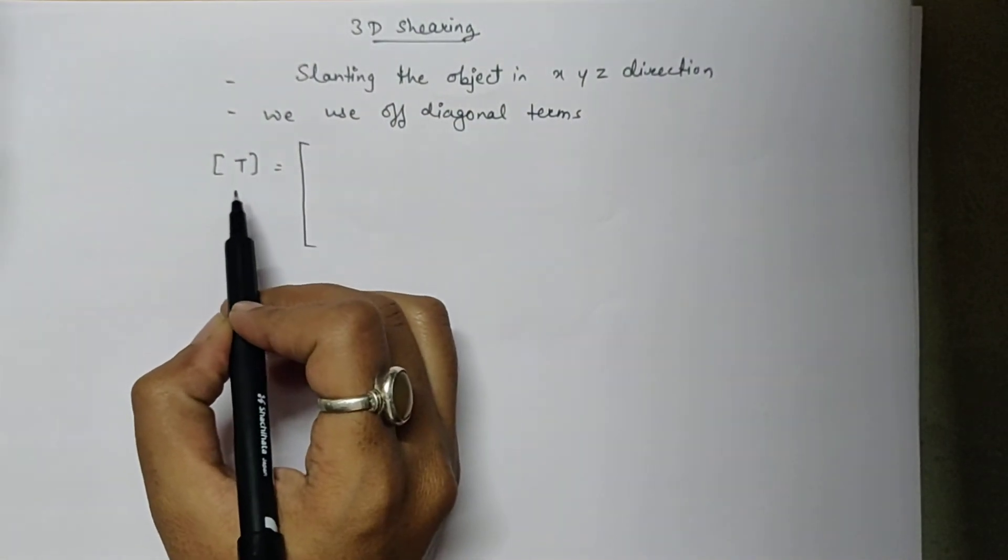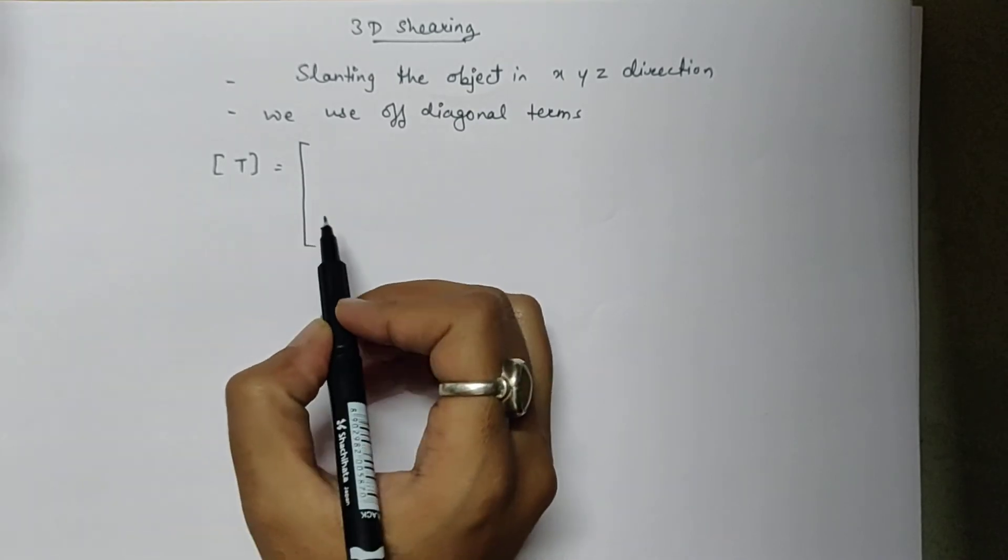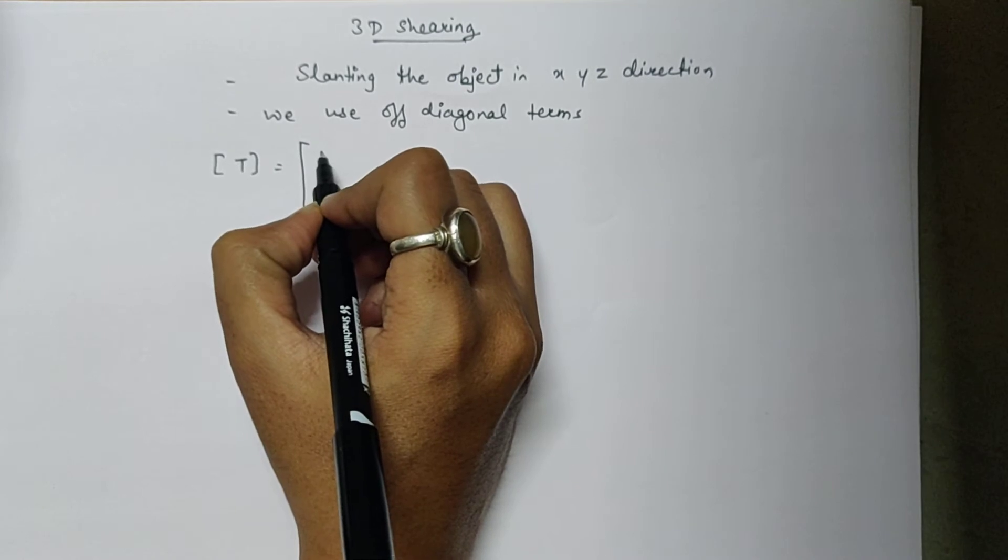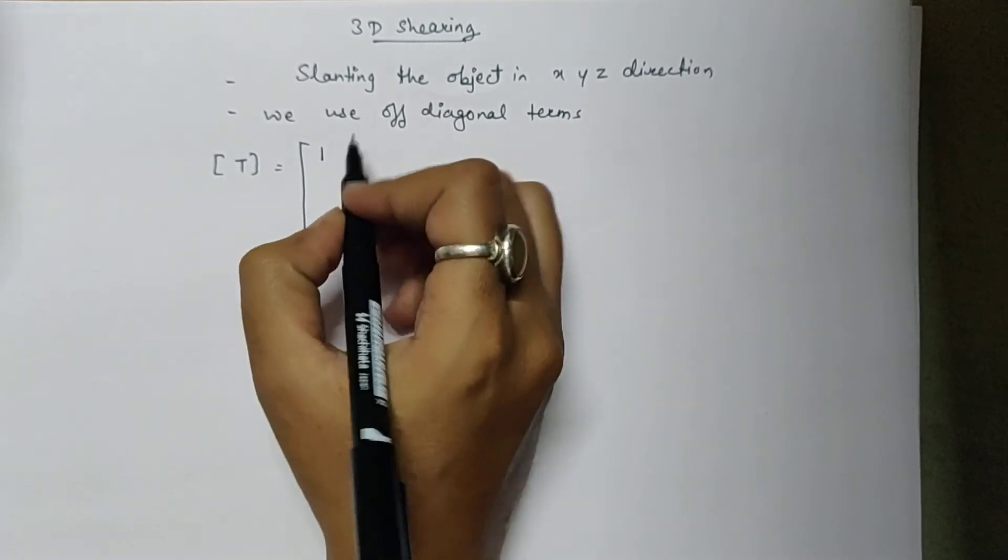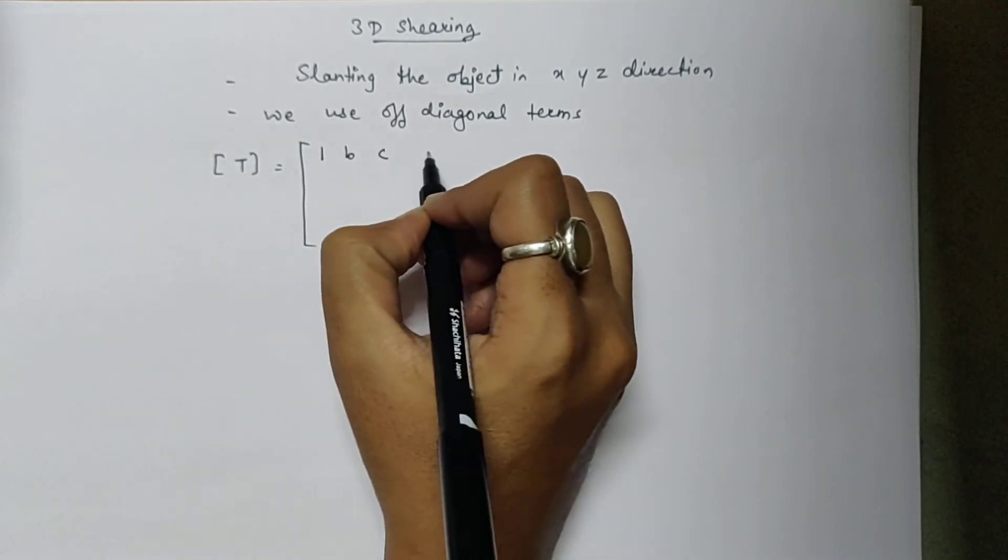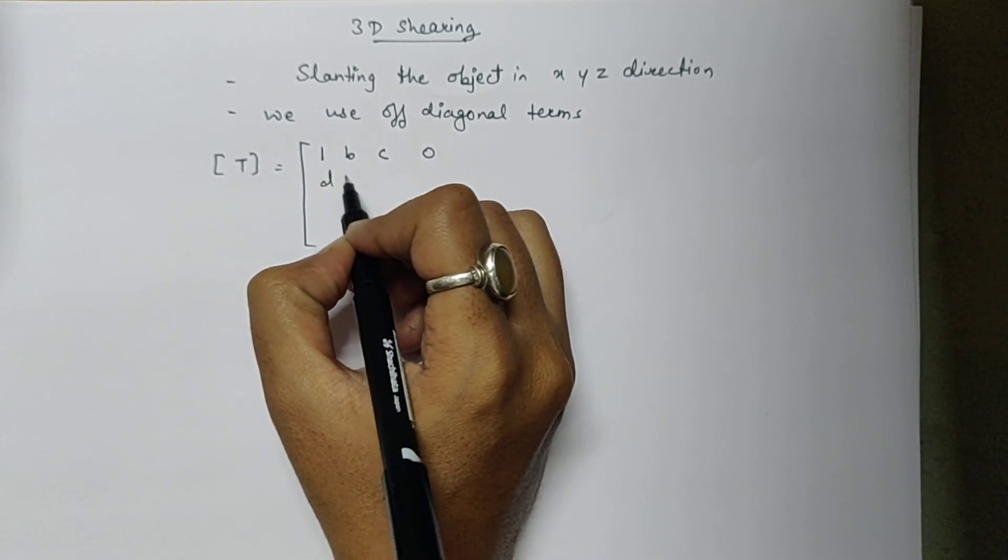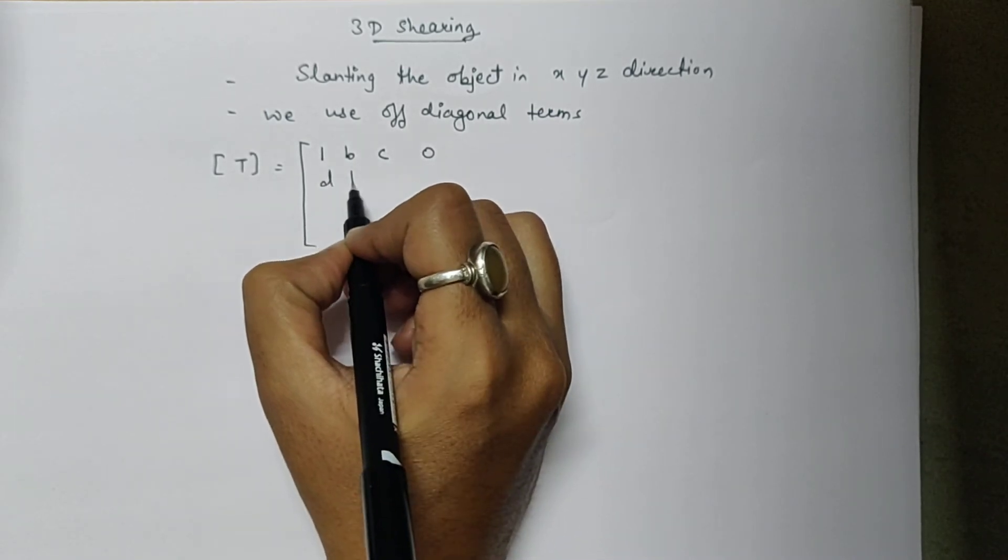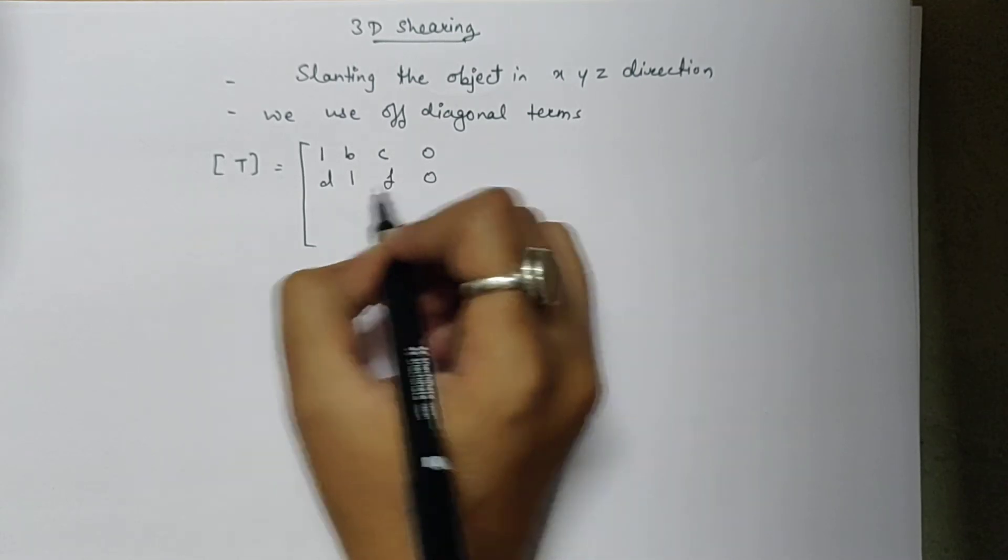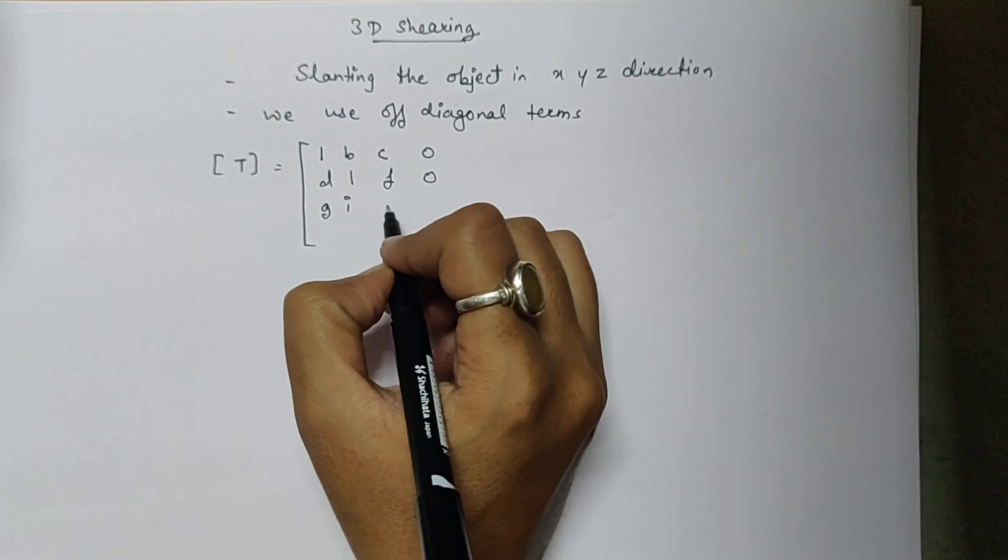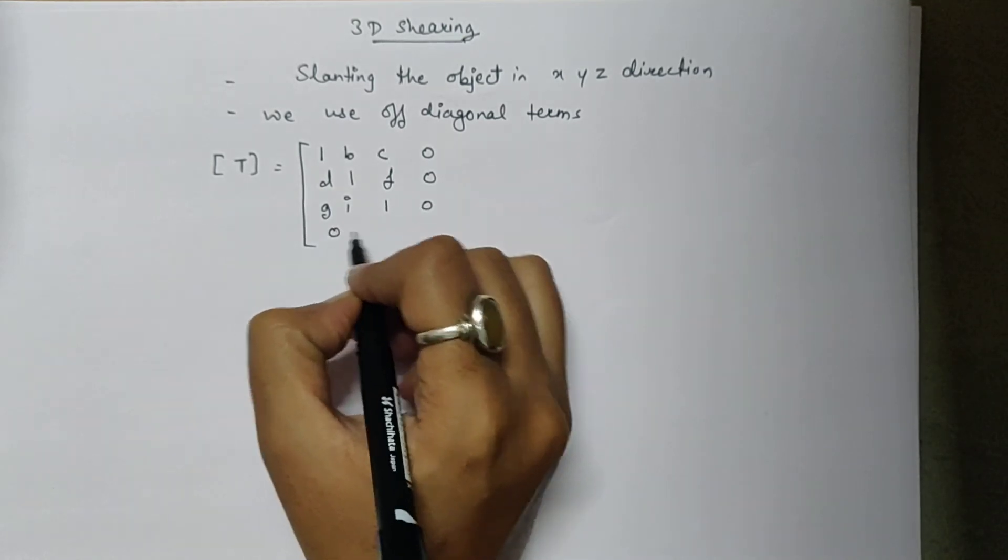Here we have the transformation matrix T. The diagonal term a will be 1, then b, c, 0. The next diagonal term e is 1, then f, 0. Similarly, g, i, then diagonal term 1, 0. And the last row is 0, 0, 0, 1.